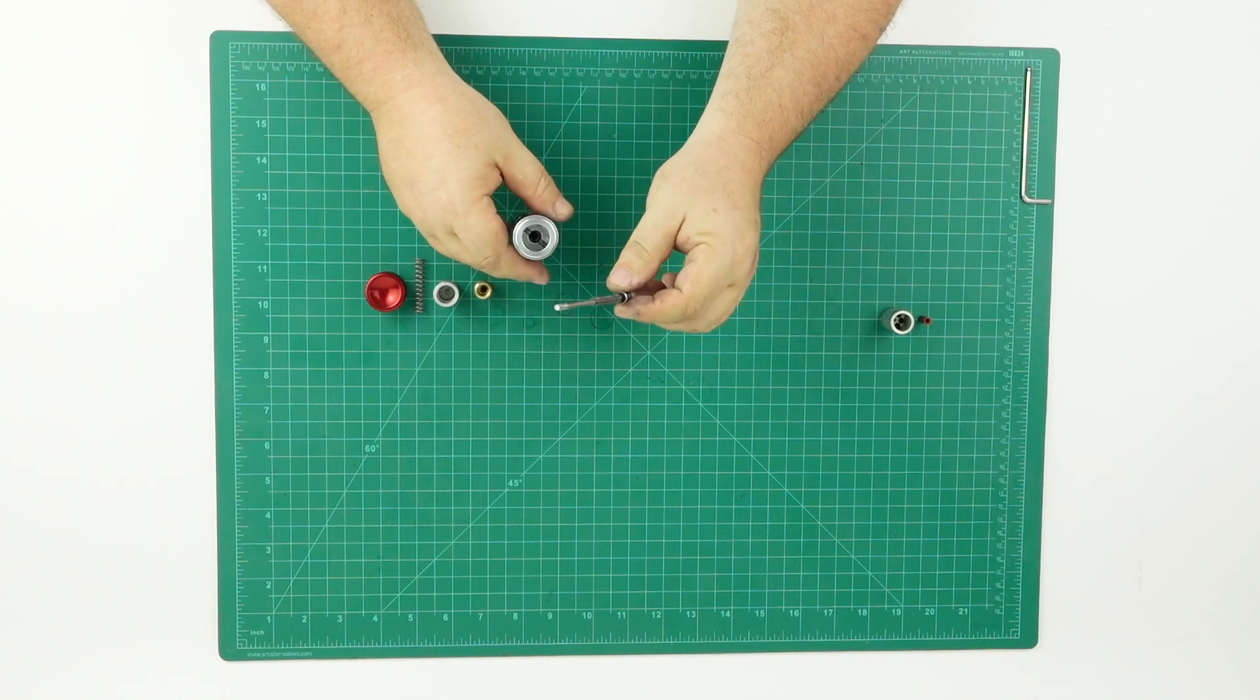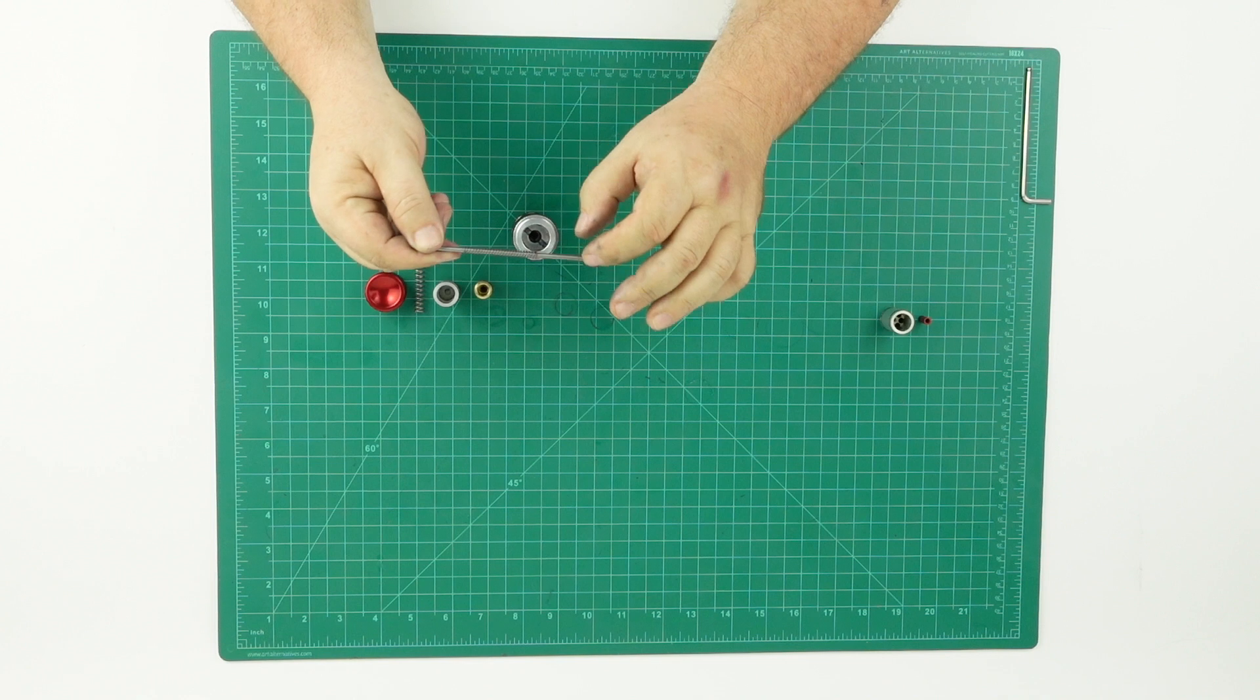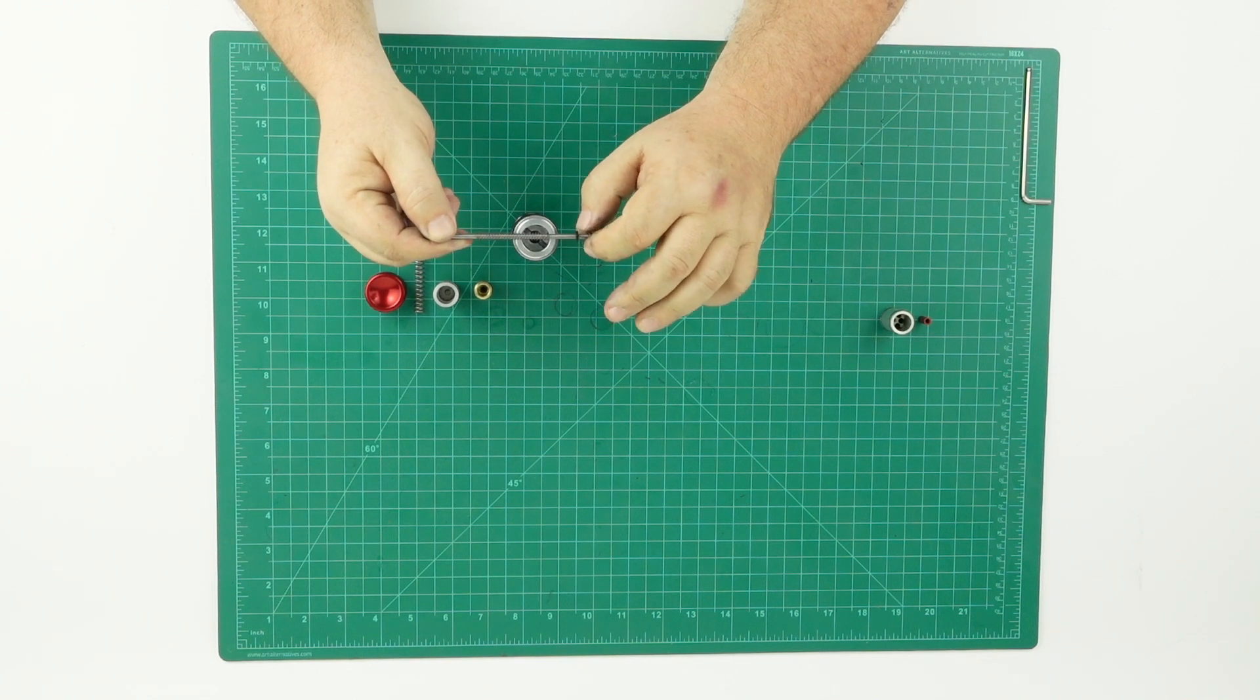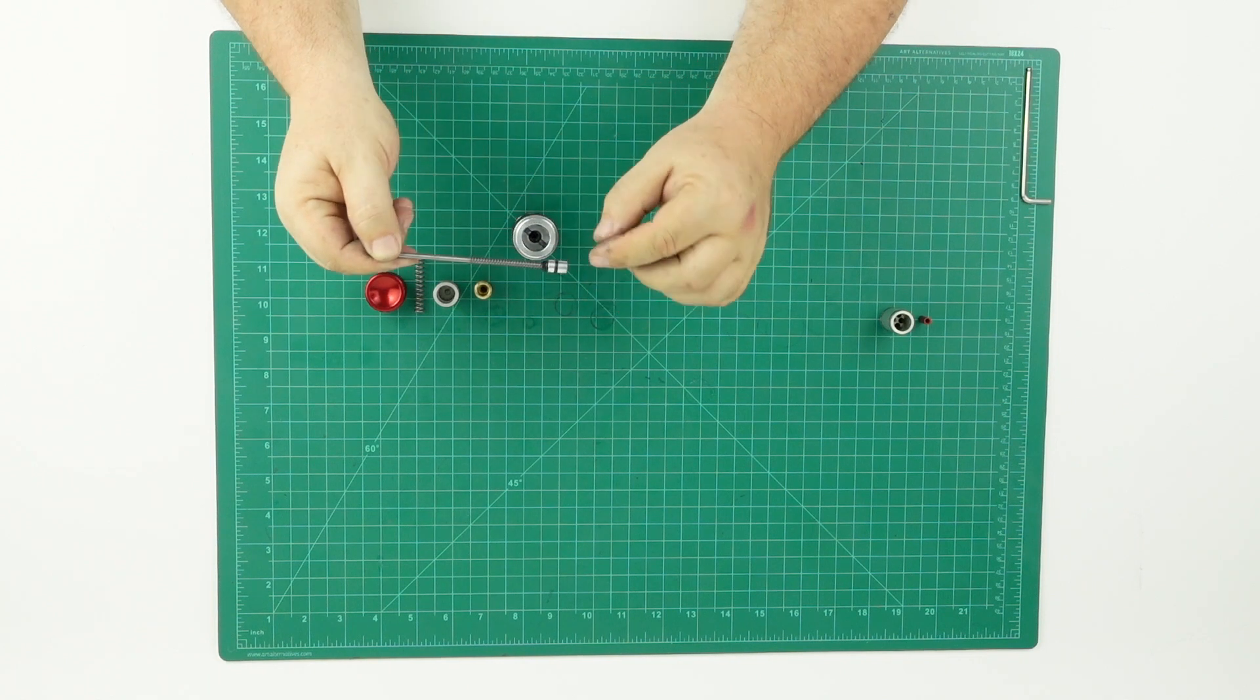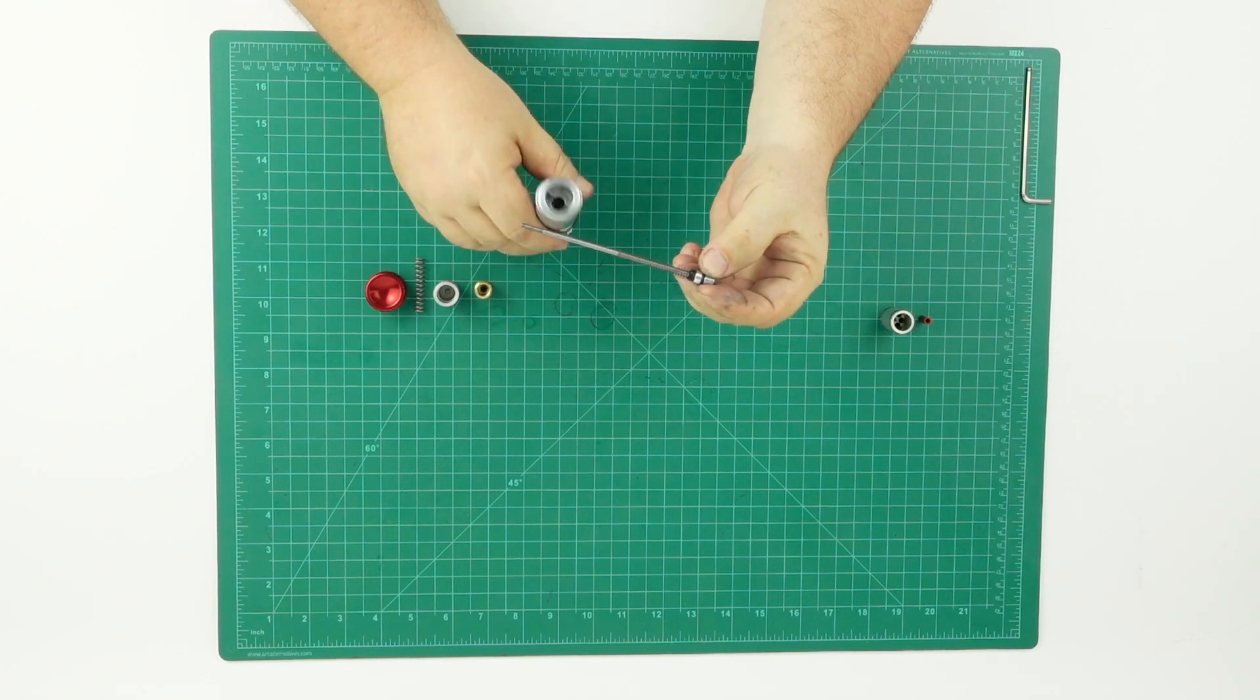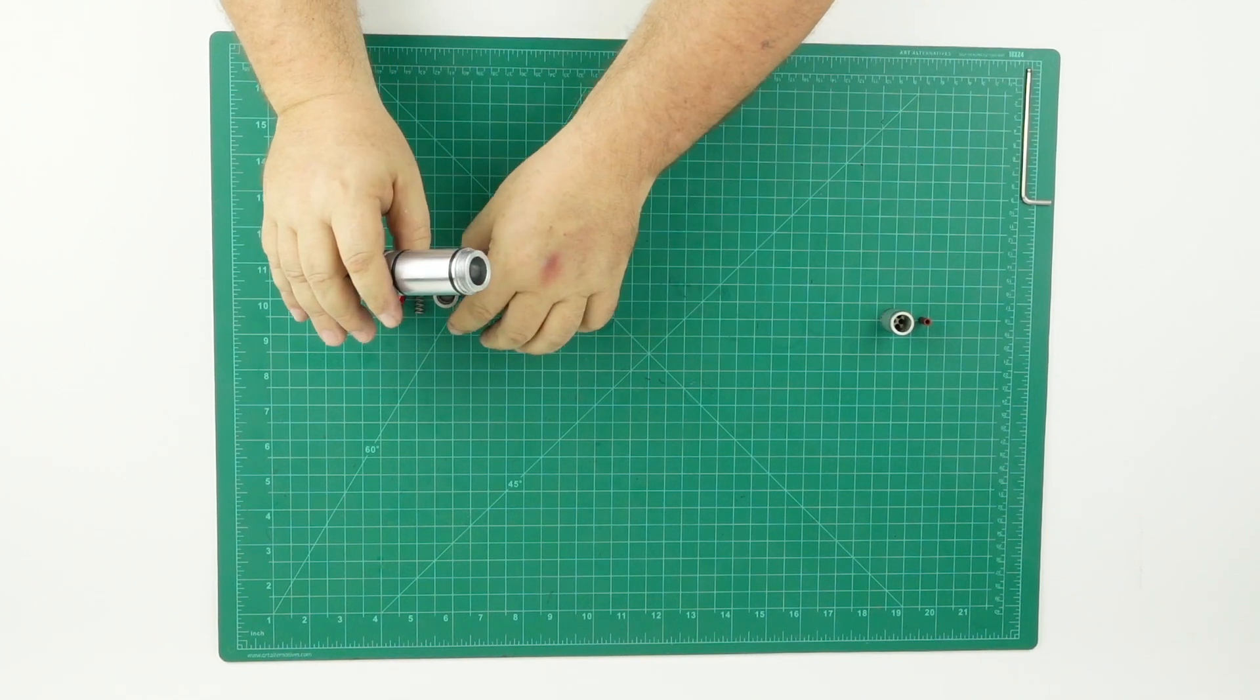Now, you're going to use a cocking rod, or a timing rod, whichever you want to call it. It's going to have a spring, a little Delvin spacer, and an O-ring with another O-ring right here. You should be able to push it right in. Keep it flat all the way forward.